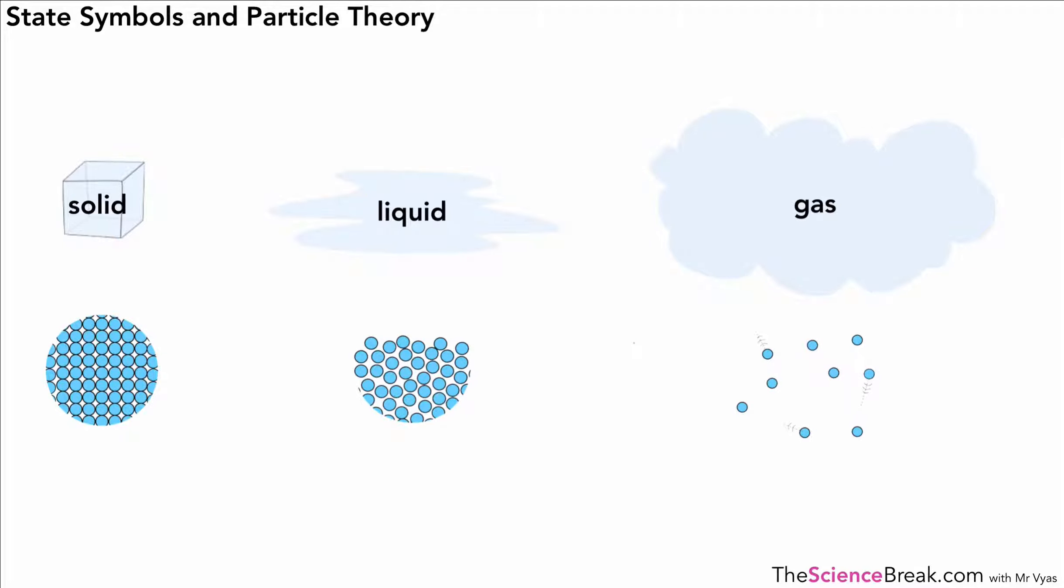Hello, today we're talking about state symbols and particle theory. First, we're going to look at the idea of particles in solids, liquids, and gases. We know that solids, liquids, and gases are all made of particles, but we use the word particle to cover either ions, atoms, or molecules.